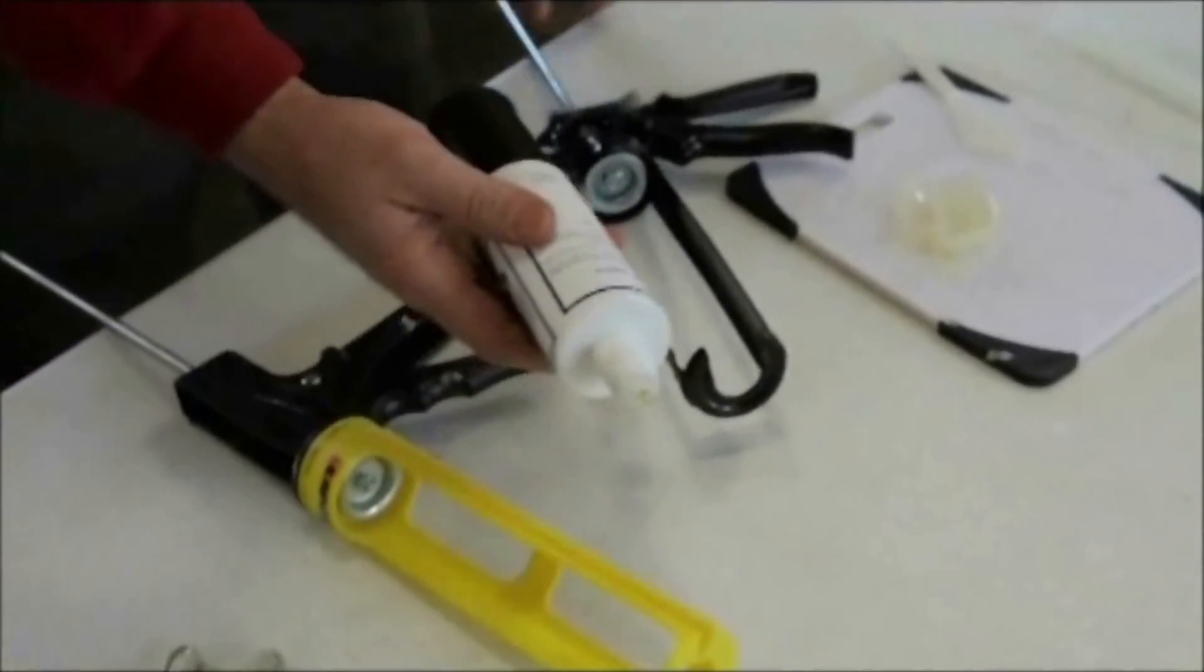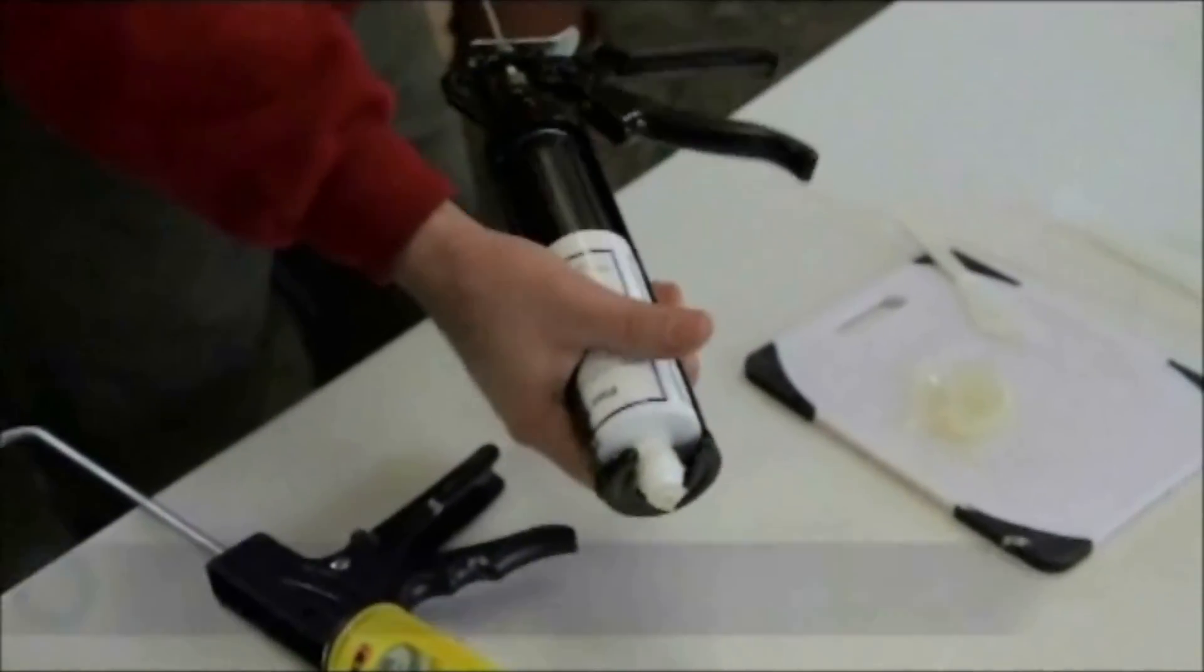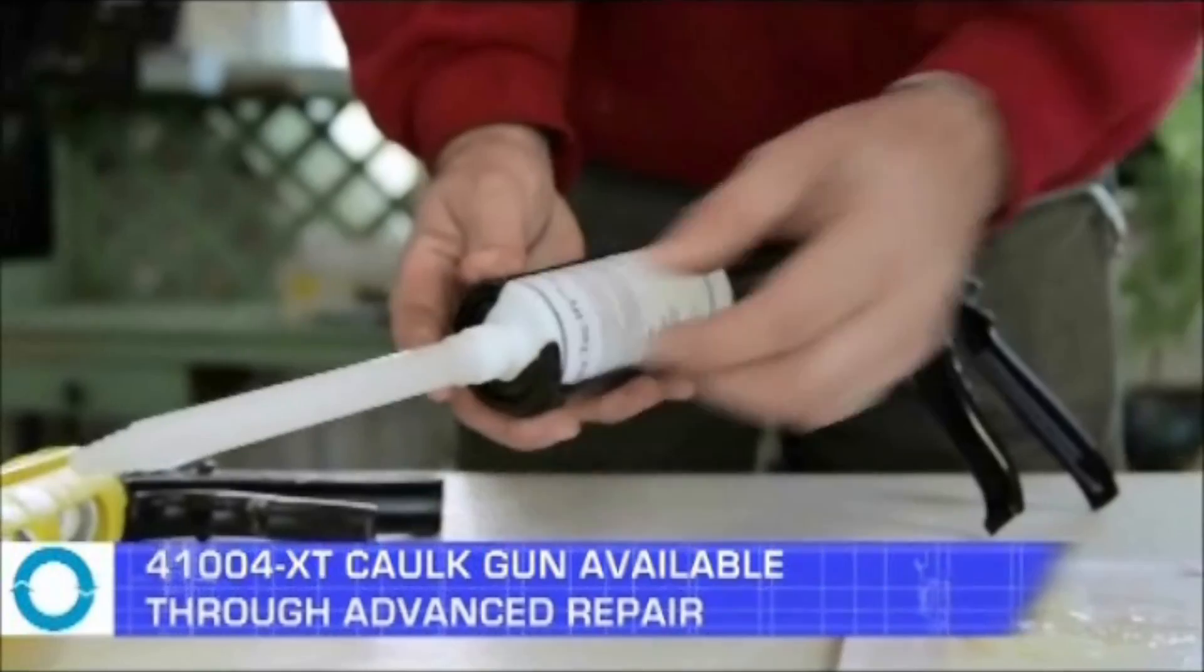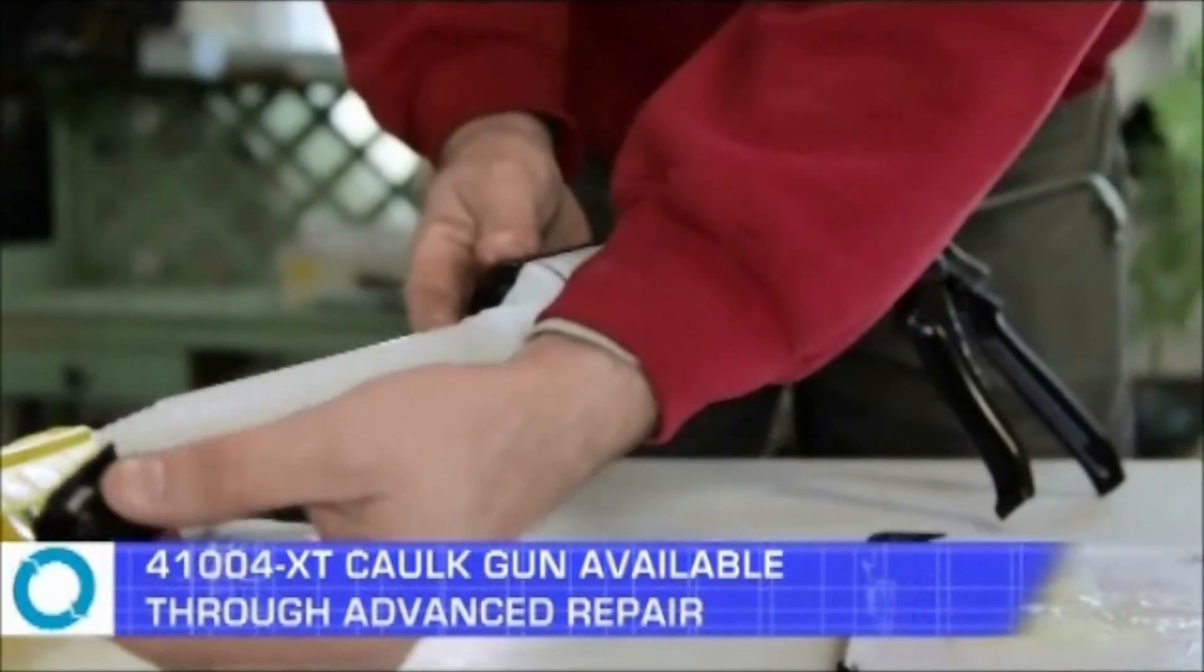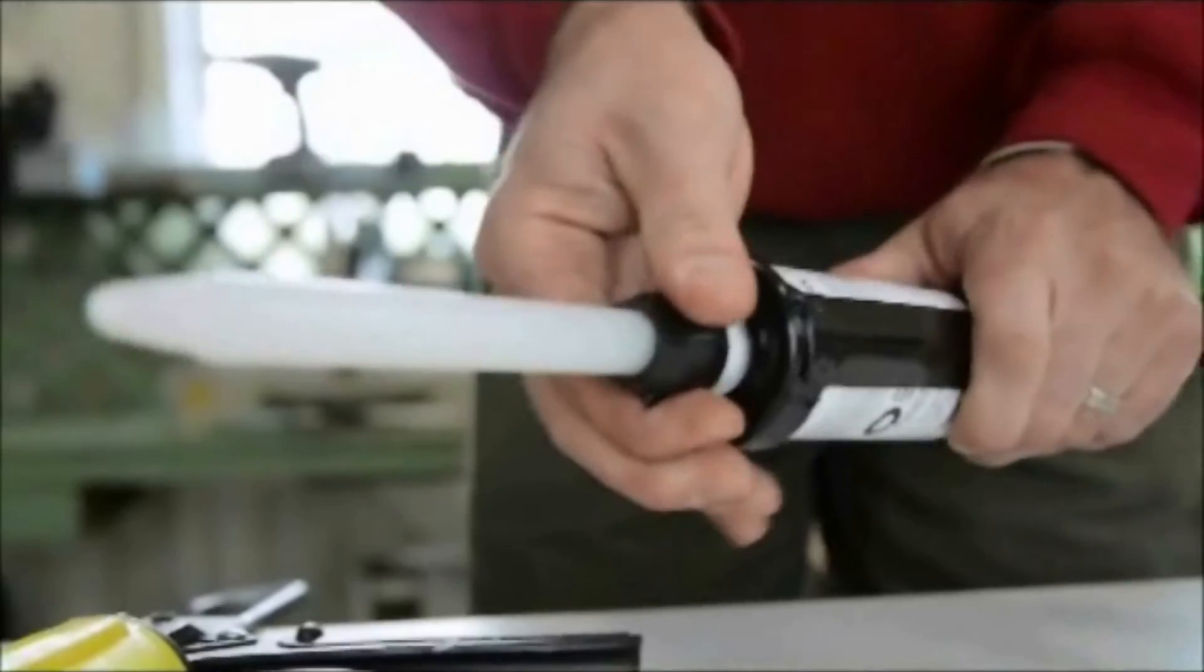If you'd like to use the static mixing nozzles for your repair with a 150ml FlexTech tube, Advanced Repair has available the 41004XT Single Cartridge Mixing Gun that can be fitted with a static mixing nozzle. Attach the mixing nozzle with a cartridge cap and dispense as needed.